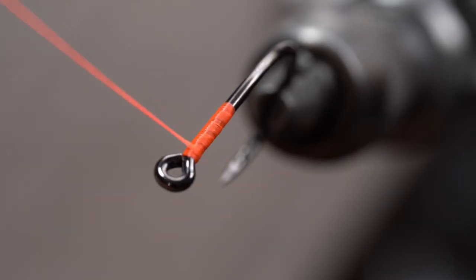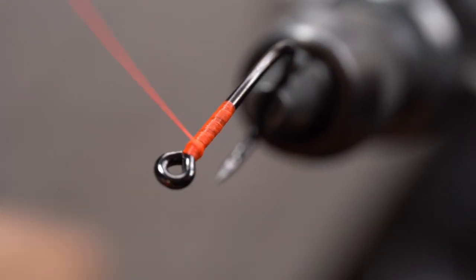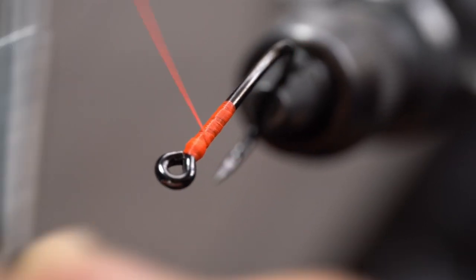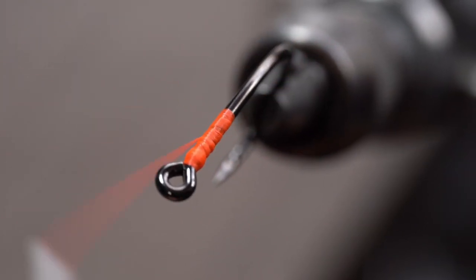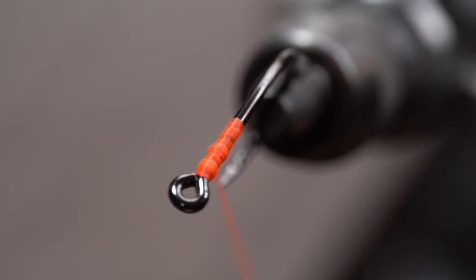The next step is going to be creating two small bumps for the dumbbell eyes, bead chain eyes, or whatever you're going to be attaching to sit in. Simply take your thread and with accurate wraps, wrap about three to five times around the same spot. Now repeat the same step the distance of the width of the eyes that you'll be attaching.